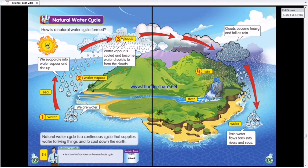And then, third, clouds. Dia jadi awain. And then, when it comes together it will become heavier. It will become heavier and it will fall as rain. Number four, rain.